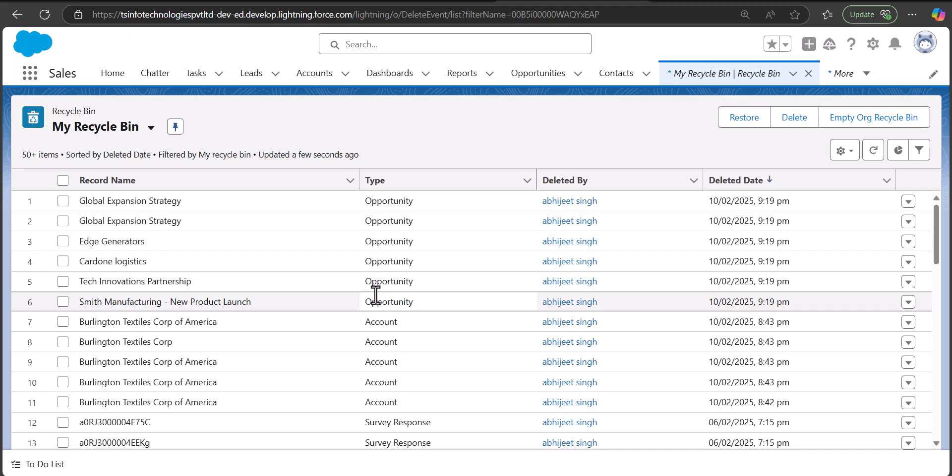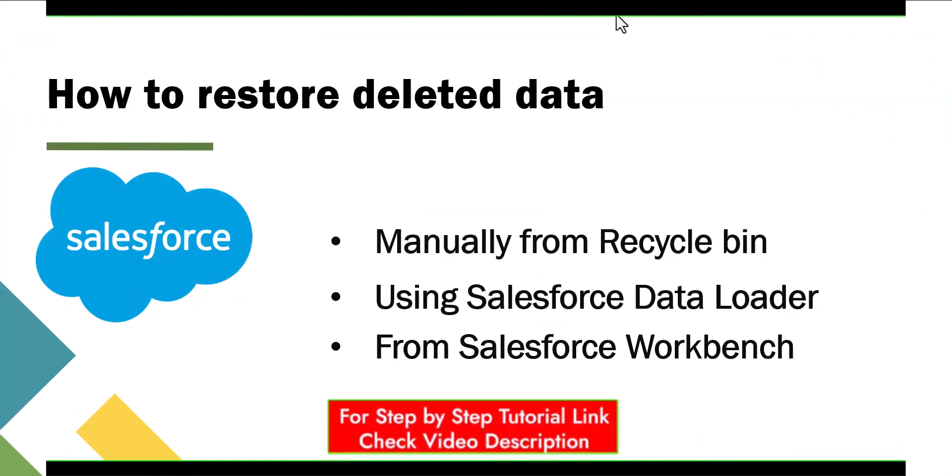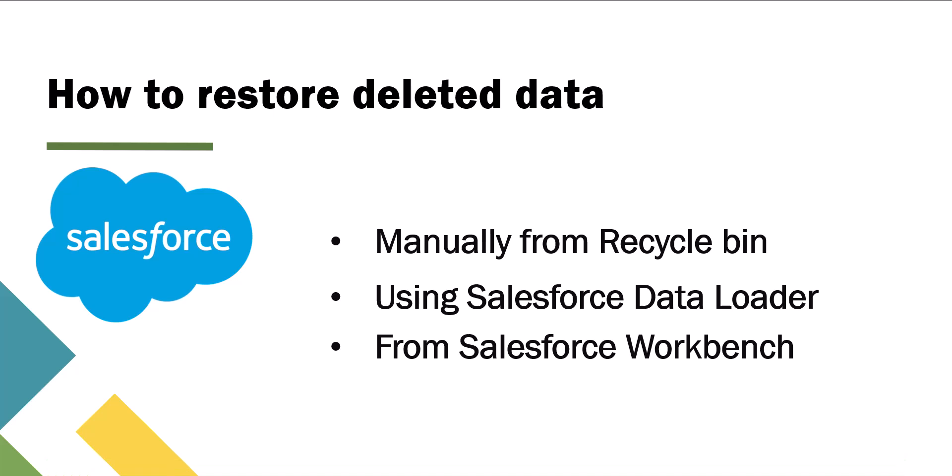To restore a record it is compulsory that the record should be in the recycle bin. There are three methods by which you can restore the deleted data. The first method is manually restoring the data directly from the recycle bin. The second method is using the Salesforce Data Loader, which is a third-party application used to perform bulk data operations. The last method is using Salesforce Workbench, where we run SOQL queries to fetch and undelete the deleted records.